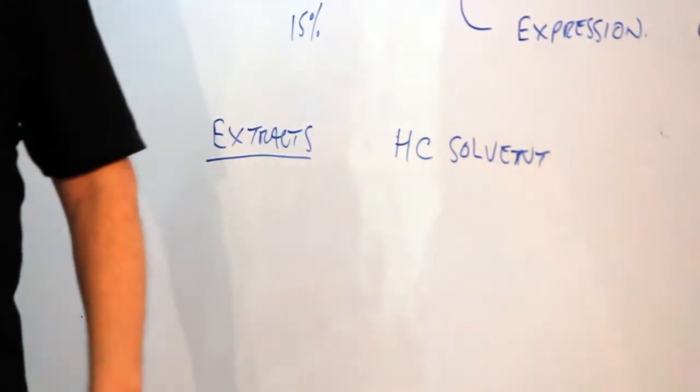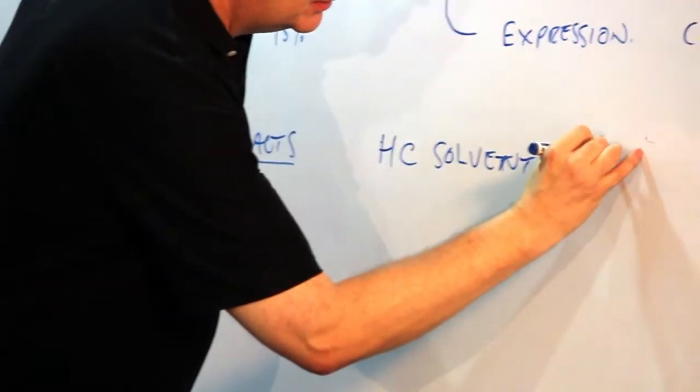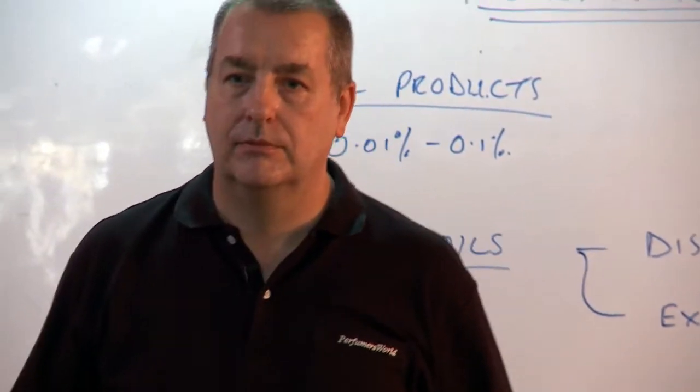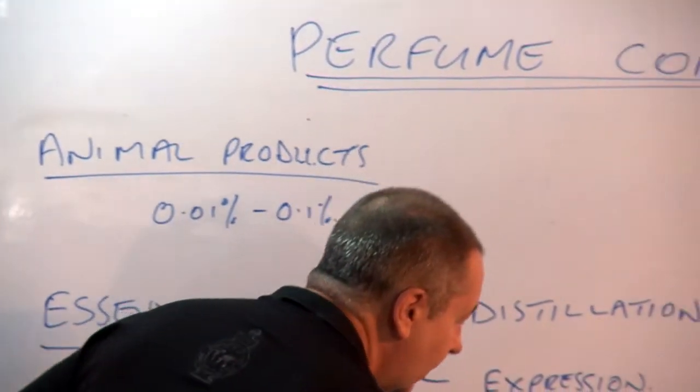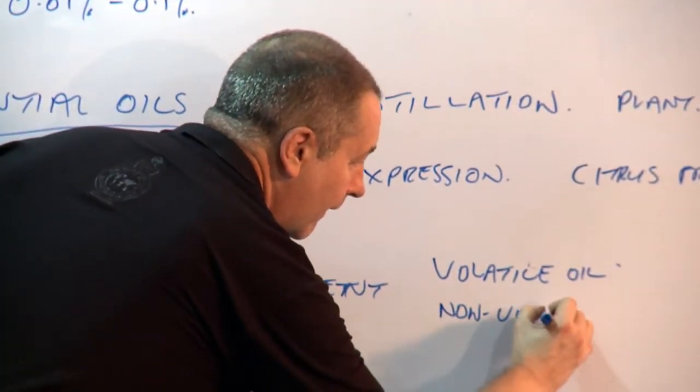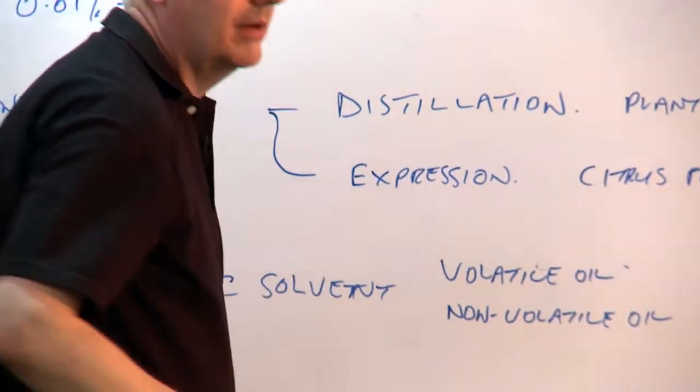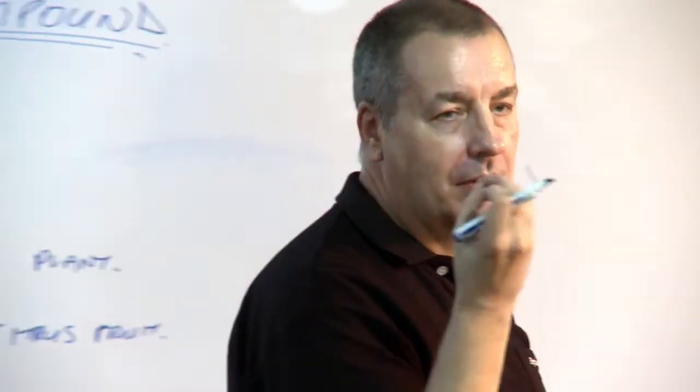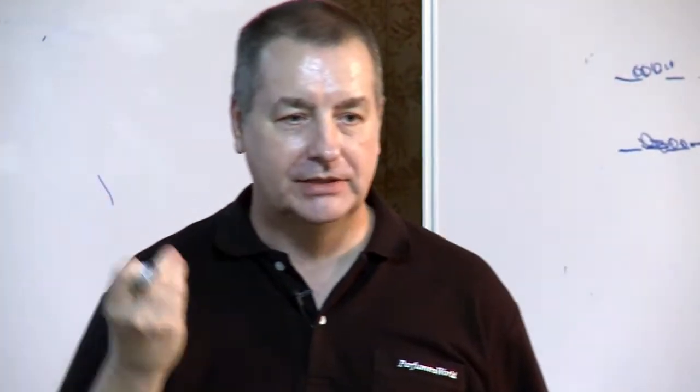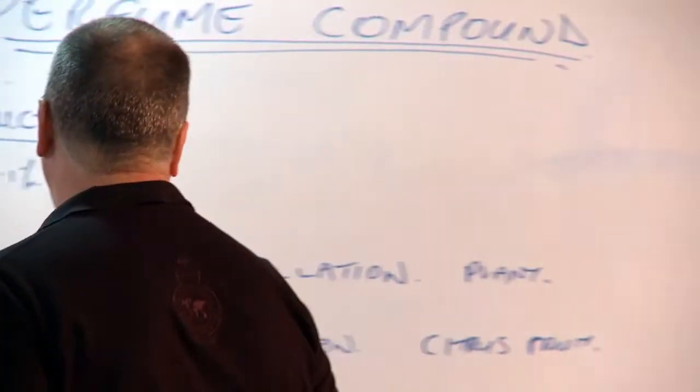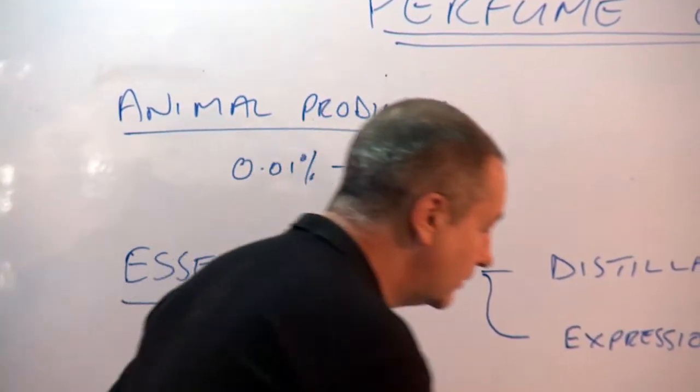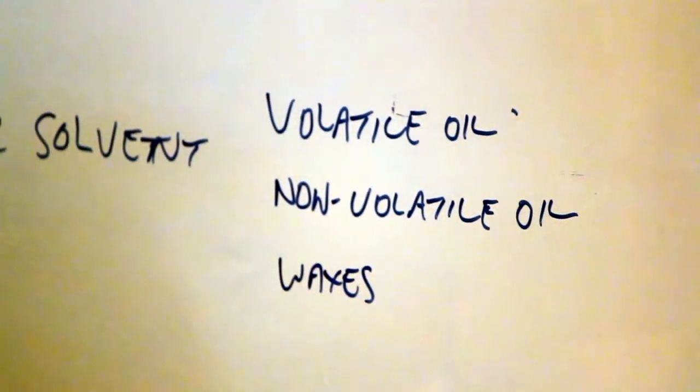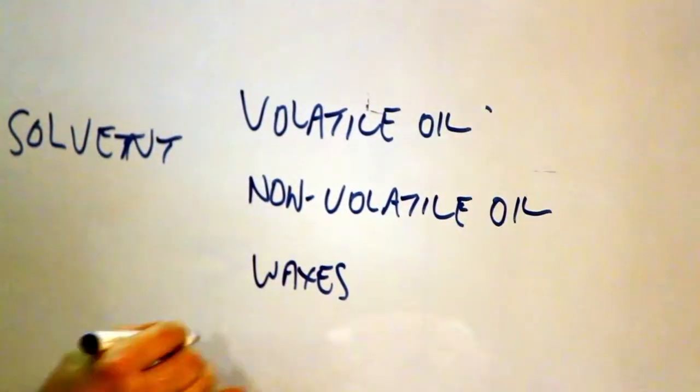It dissolves the volatile oil. That's the one that we call the essential oil. It also dissolves non-volatile oil. Some of the oils that exist in a plant are also non-volatile. There are other oils in there too. So this will dissolve the non-volatile oils. Also dissolves the waxes, and will dissolve some colour too.